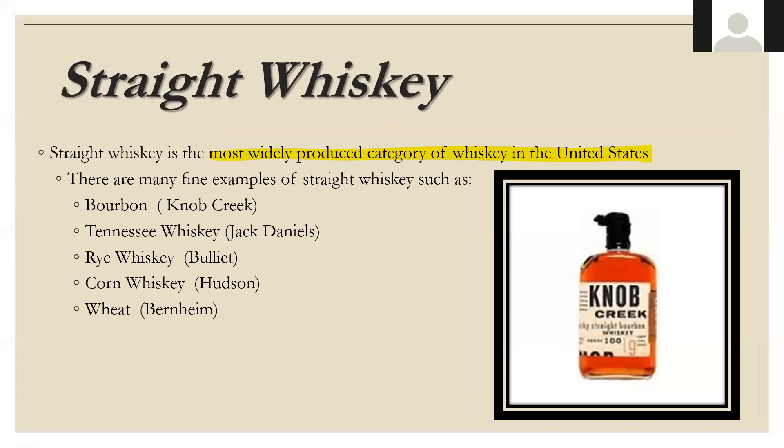Great examples of straight whiskey categorically include bourbon, Tennessee whiskey, rye whiskey, corn whiskey, and wheat whiskey. Good producer examples: Knob Creek for bourbon, Jack Daniel's and Dickel for Tennessee whiskey — really the only couple making Tennessee whiskey — Bulleit for rye, Hudson for corn whiskey, and Bernheim for wheat whiskey, which is super cool.